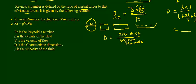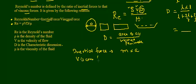Reynolds number is the ratio of inertial forces to viscous forces. Inertial forces are forces that come into play because of the mass — inertial force = mass × acceleration. Viscous forces are forces that come into play because of the viscosity of the flow, given by μ × area of contact × velocity gradient. It is the relationship between these two which decides whether the flow is laminar or turbulent.